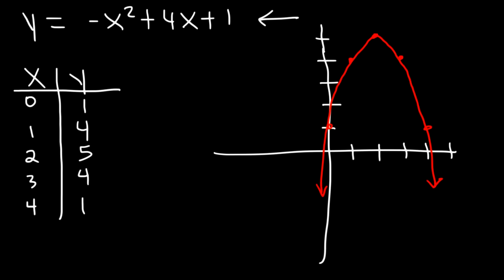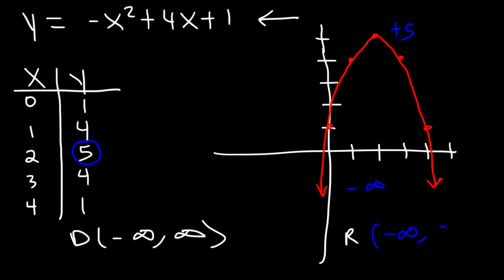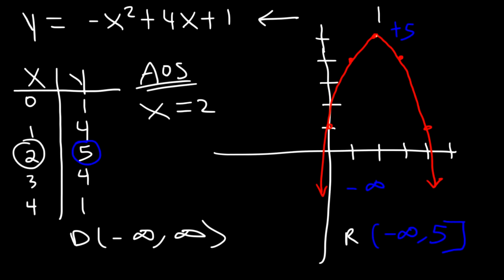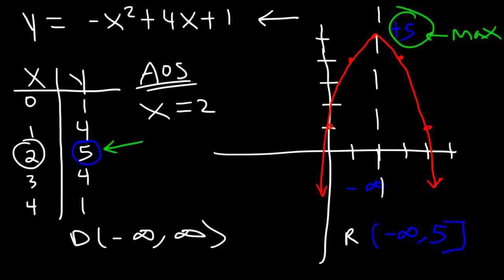The vertex is at (2, 5). The next points are (1, 4) and (3, 4). And then (0, 1) and (4, 1). The domain is going to be everything — negative infinity to infinity. For the range, the lowest y value is negative infinity and the highest is 5, which is the y-coordinate of the vertex. So the range is from negative infinity to positive 5, including 5, so we put a bracket there. The axis of symmetry is the x-coordinate of the vertex, which is 2, so it's x equals 2. Because the graph opens downward, it's not going to have a minimum value — rather, it's going to have a maximum value. The maximum value is the y-coordinate of the vertex, so it's 5. And that's it for this lesson.